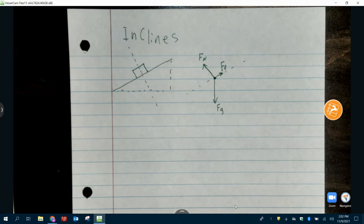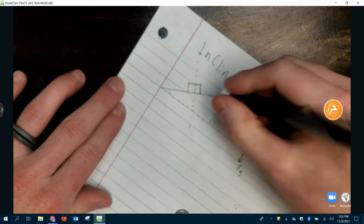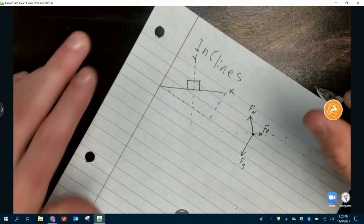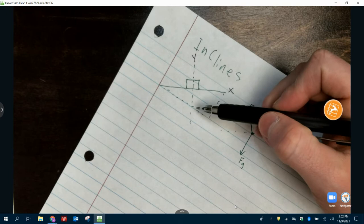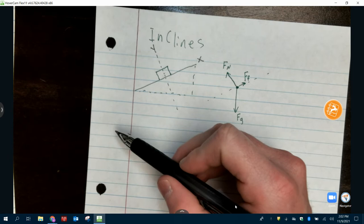So what we're going to do instead is we're going to kind of turn this. Instead of X being left and right and Y being up and down, if I turn this, think of this as my X and this as my Y. What I mean by that is if we make Y how far it is above or below the surface, does it ever come off the surface of the ramp? No, it always slides across. So there'll be no acceleration there. And then all your acceleration will be in the X direction down the ramp.